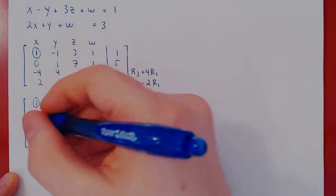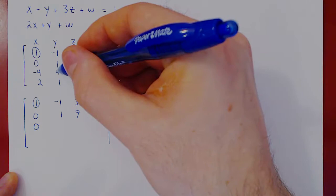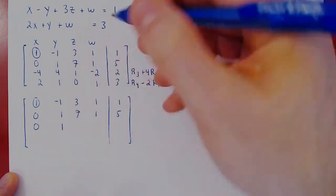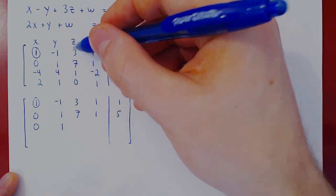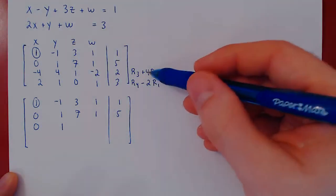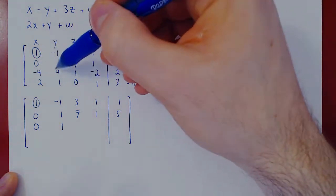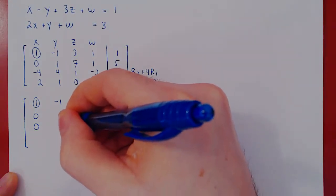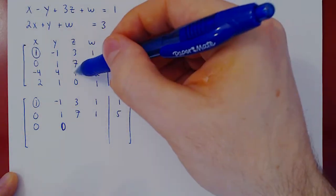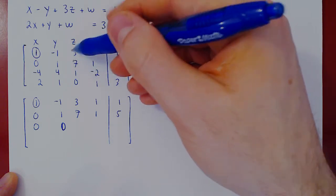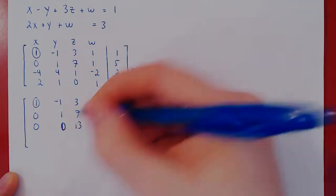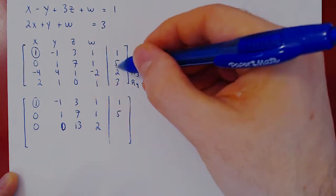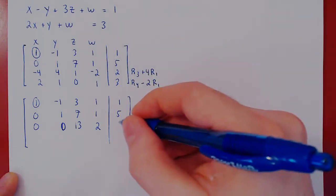Let's apply the first row operation: row three plus four times row one. Negative four plus four is zero. Four plus three times negative one — four minus three — is one. Four plus four times negative one is four minus four, zero. One plus four times three is thirteen. Negative two plus four times one is positive two. And two plus four times one is four — two plus four is six.